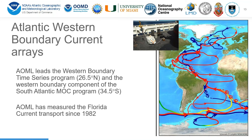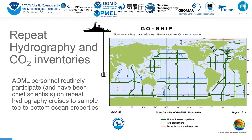AOML leads the western boundary components of two efforts to monitor the Atlantic overturning circulation at 26.5°N and 34.5°S. As part of this, we've measured the Florida Current transport since 1982, one of the longest ocean climate time series. We participate in and have led repeat hydrographic sections from WOCE through CLIVAR to the GO-SHIP Program, measuring large-scale long-term changes in a vast suite of ocean properties around the world.